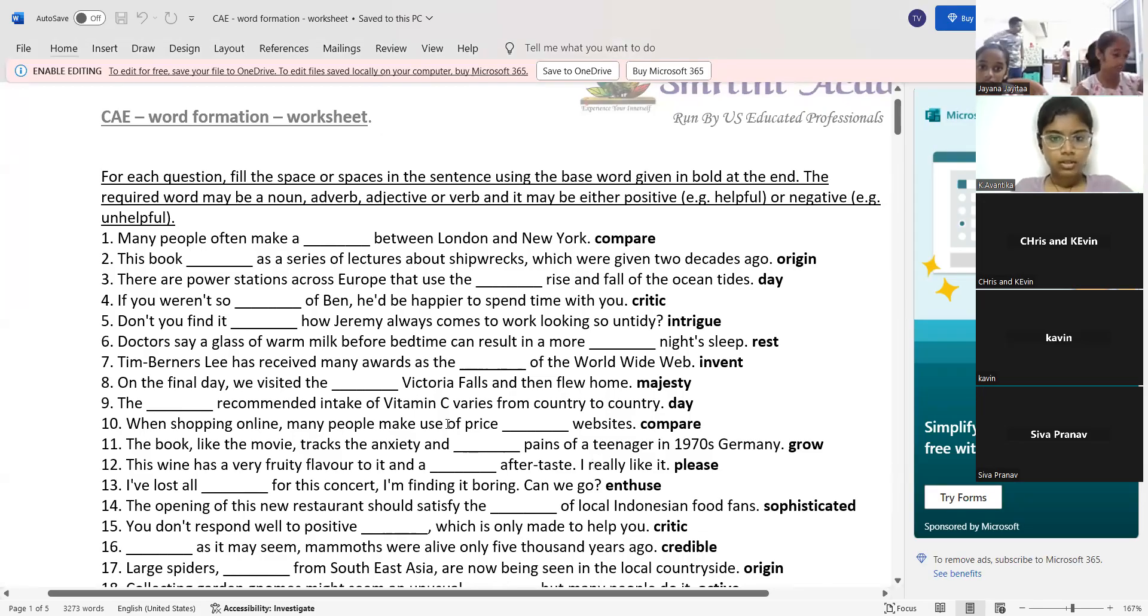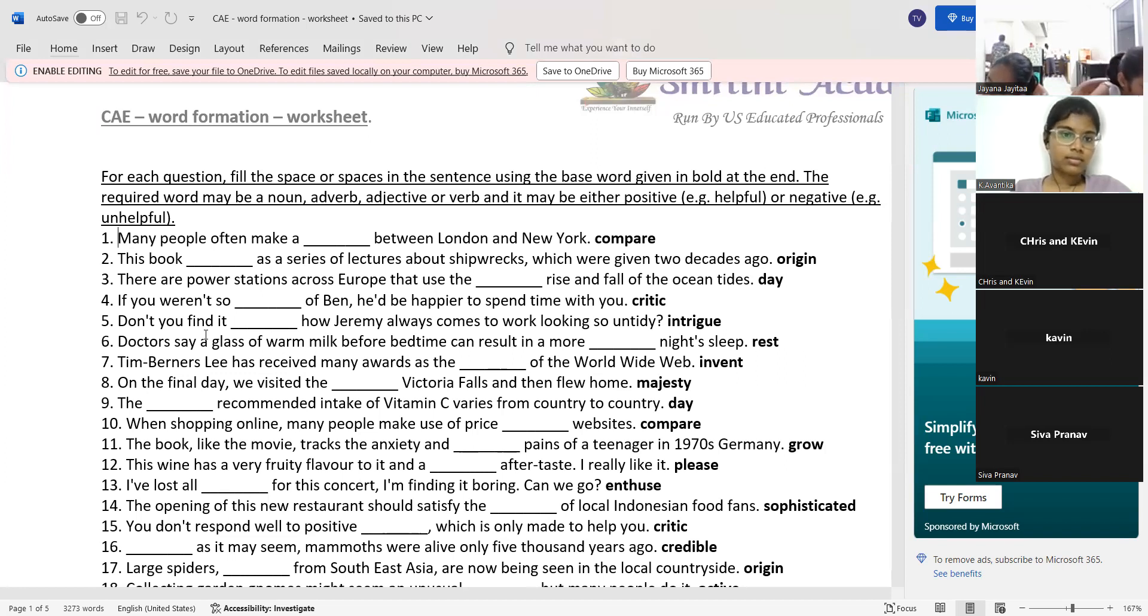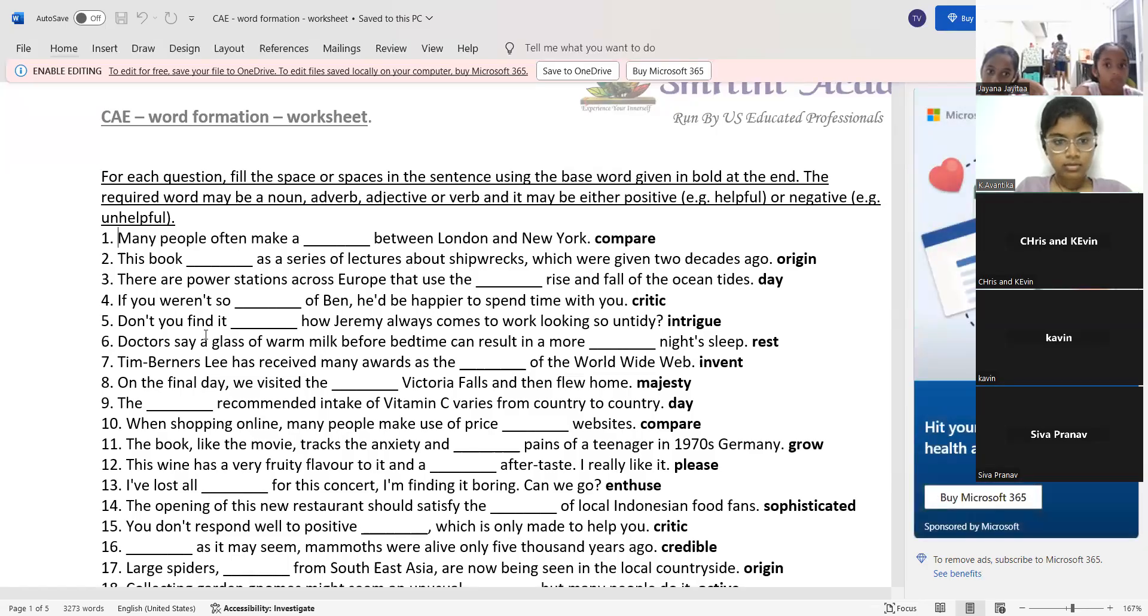My energy level might be a little bit slow today. I will hope to manage it. I will start with Zavantika. Zavantika reads the first question. Many people often make a dash between London and New York. The core word is compare. People who have attended FCE, they know this concept to an extent. But if this is the CAE 11, that's all. Same thing already. Make a comparison between. Very good. Make yeah. After yeah, only the noun will come. So they are giving the verb. You have to convert that verb into a noun and just to do this. That's all. Super.